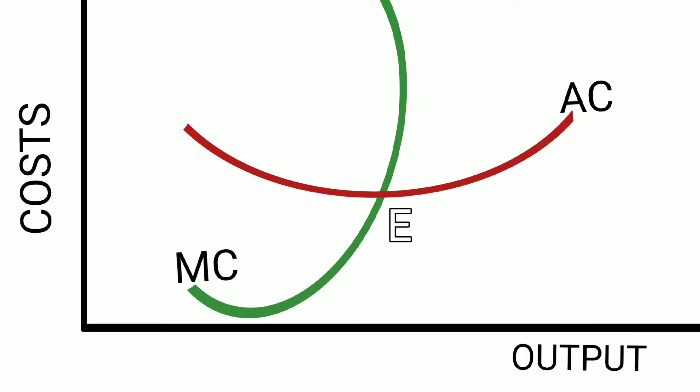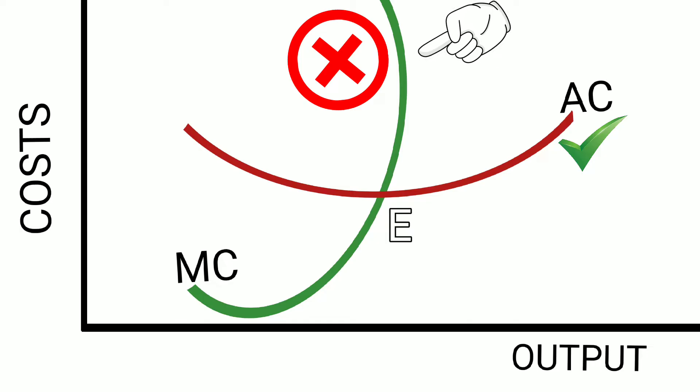In the diagram you can see the average cost and marginal cost. The point E is the minimum point of AC, but this is not a correct diagram. Why? Because you can see AC is all right, but the MC is after some time backward bending — that is not possible. MC can never be a backward bending curve.